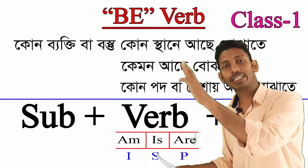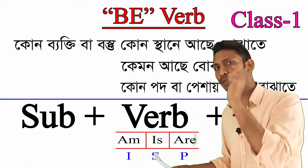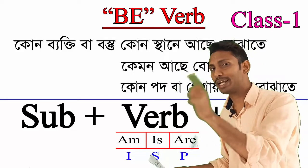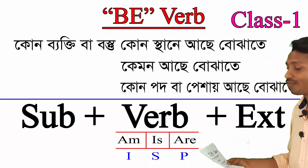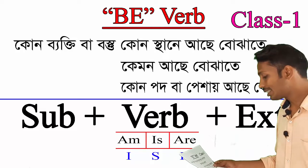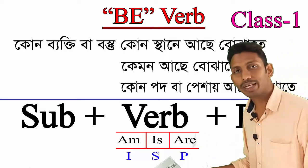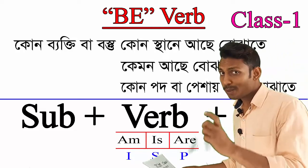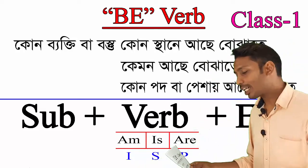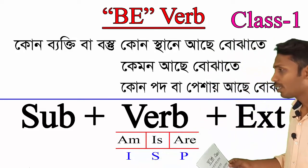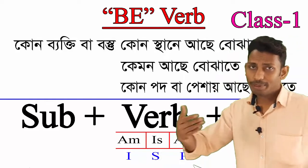We can categorize the verb into three groups: Present — am, is, are; Past — was, were; Future — shall be, will be. So today's class is on 'Amateur' (the present tense group).